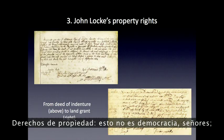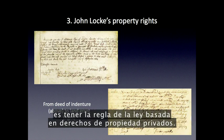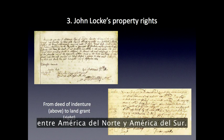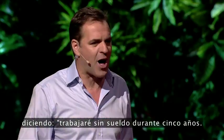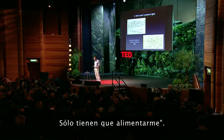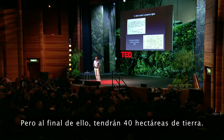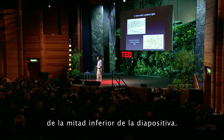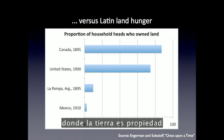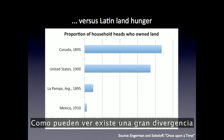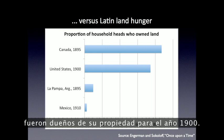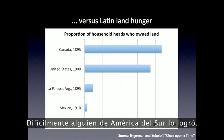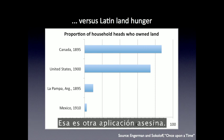Property rights — it's not the democracy, folks. It's having the rule of law based on private property rights. That's what makes the difference between North America and South America. You could turn up in North America having signed a deed of indenture saying "I'll work for nothing for five years, you just have to feed me" — but at the end of it you've got 100 acres of land. That's not possible in Latin America, where land is held onto by a tiny elite descended from the conquistadors. Most people in rural North America owned some land by 1900; hardly anyone in South America did. That's another killer app.